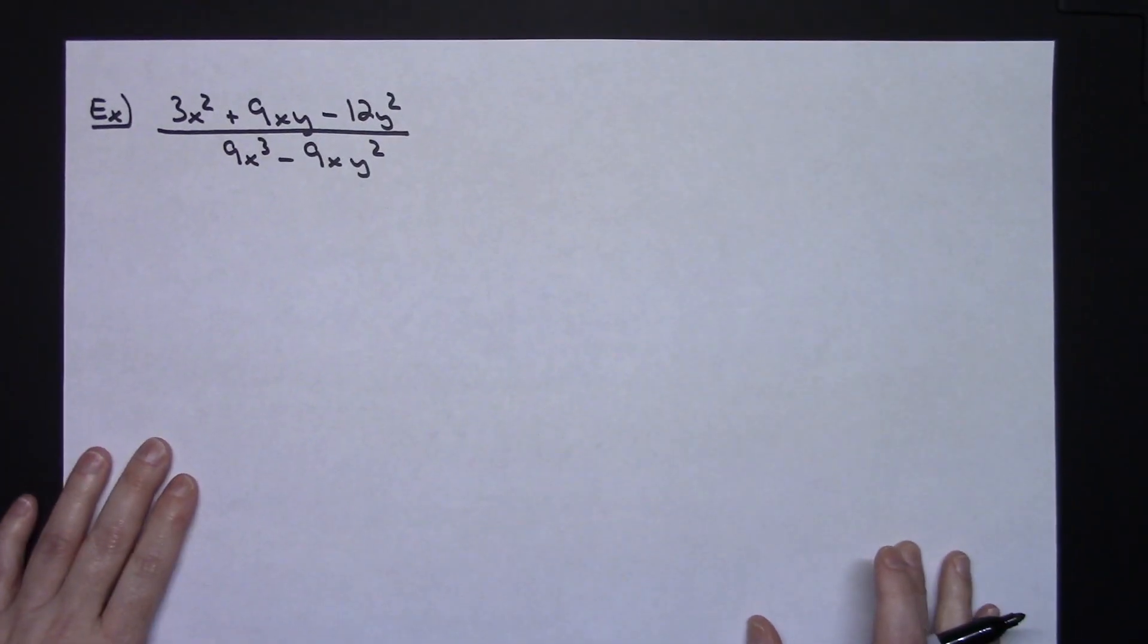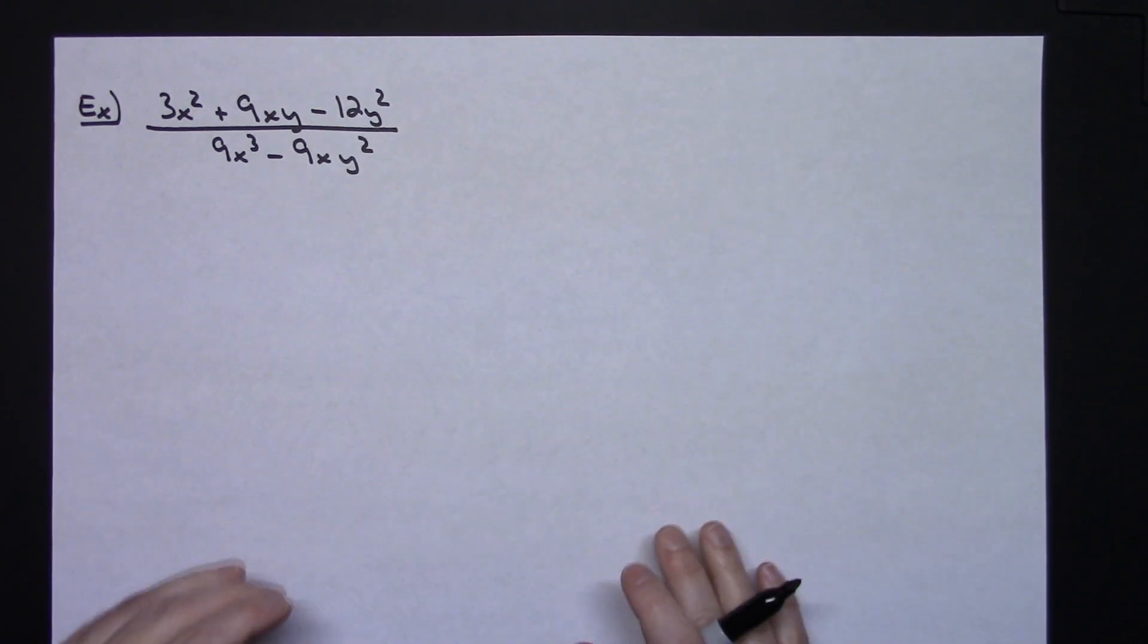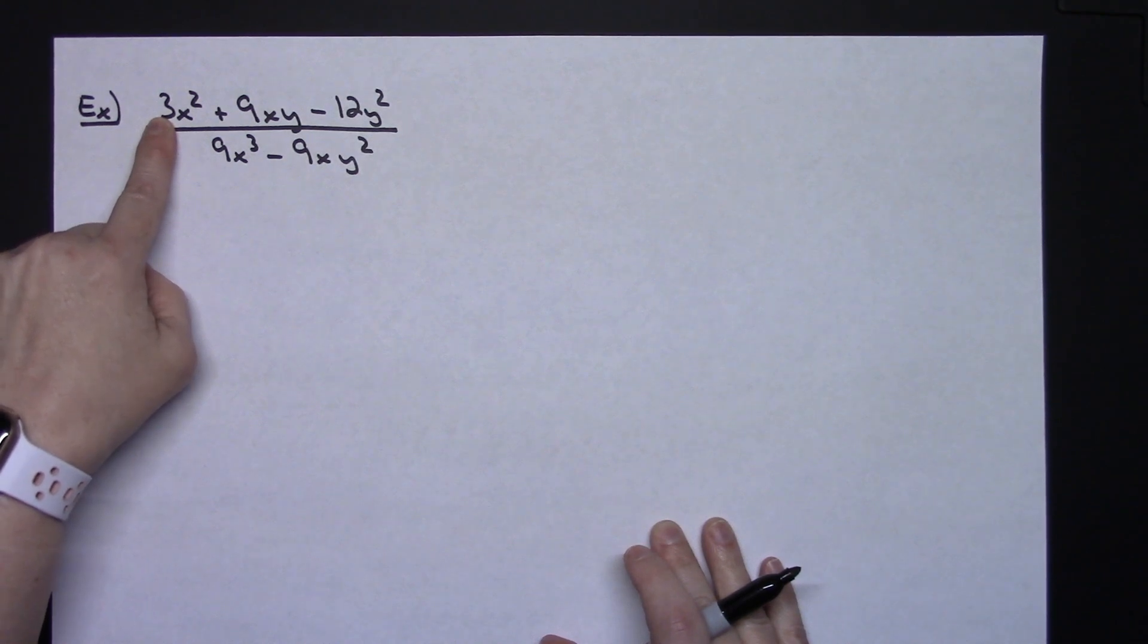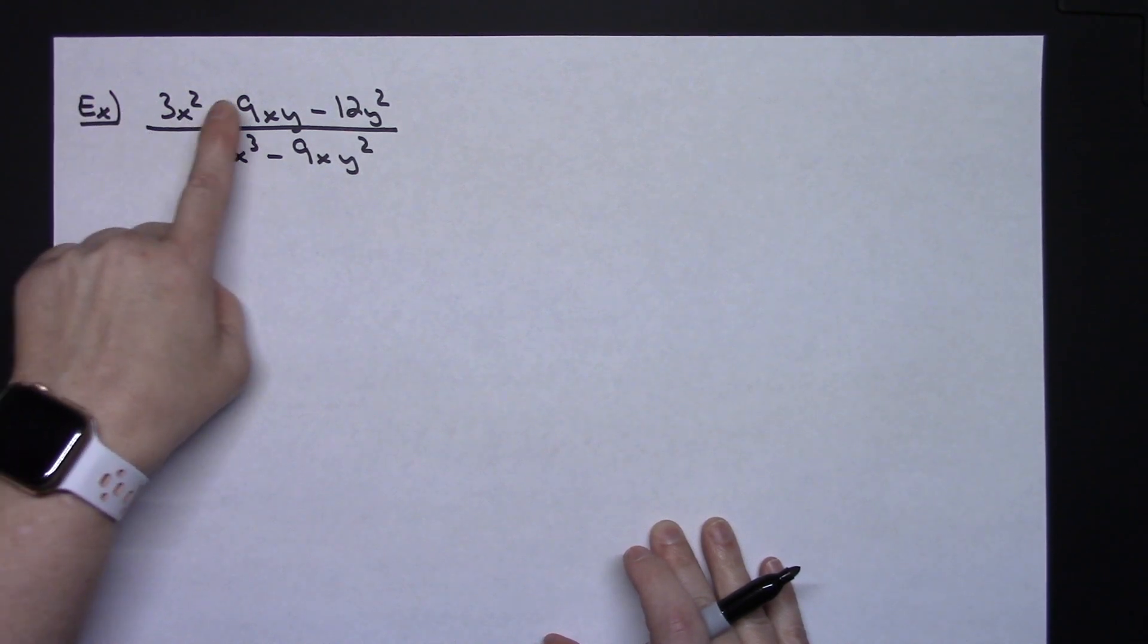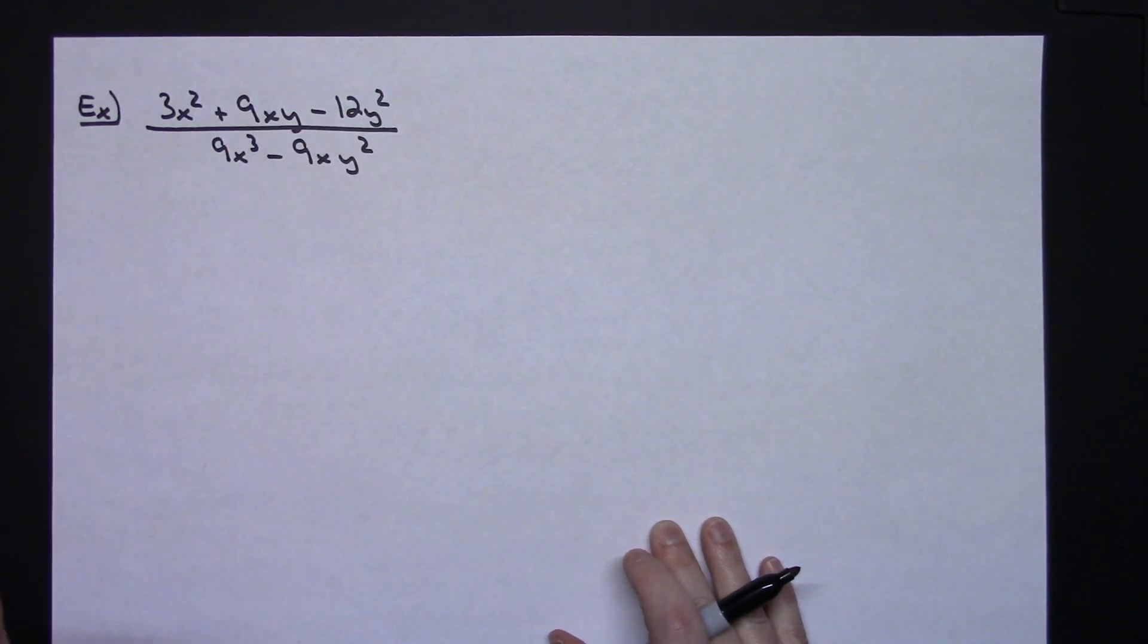All right for a second example here again we're going to do a trinomial on the top and then a binomial on the bottom and see where this takes us. All right now on this trinomial on the top I think what I want to make sure and look for is my greatest common factor because I'm seeing a 3 and a 9 and a 12 so I'm going to have a greatest common factor of 3 on the top that I can take out.